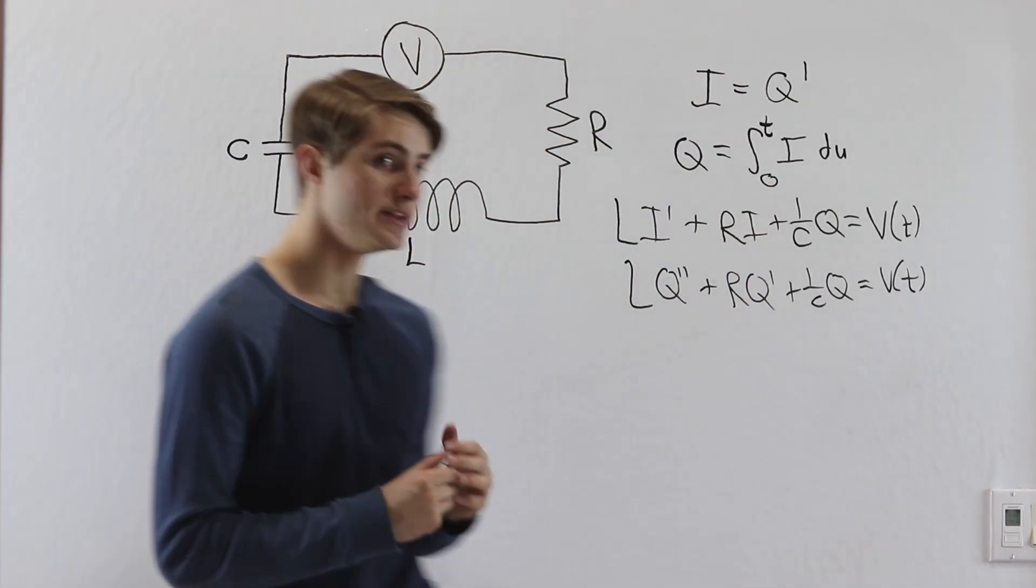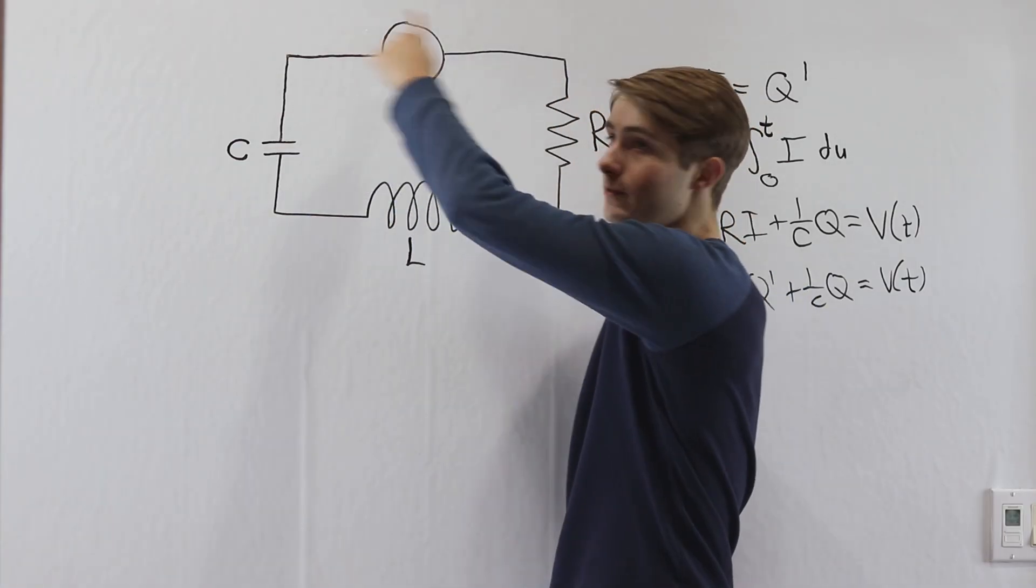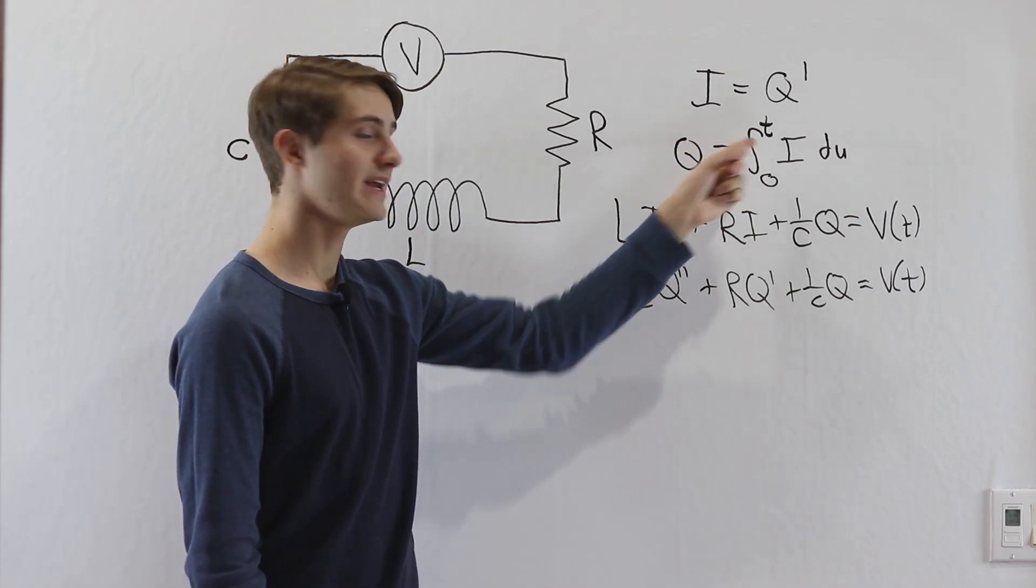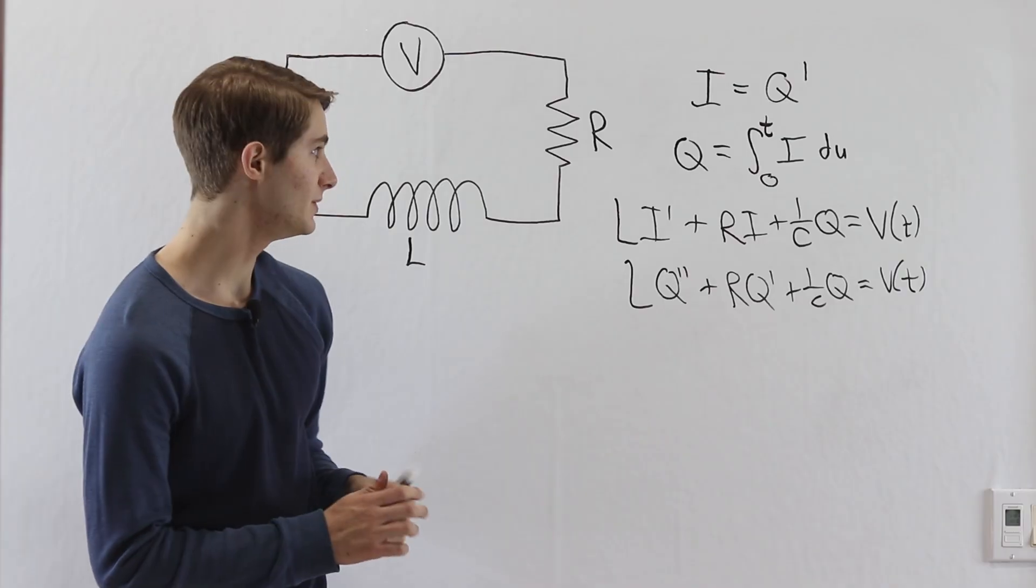Now what this means is that the charge on this capacitor is going to be a function of how much current has gone through this circuit between the times 0 and T, where T is that variable that this differential equation is based on.